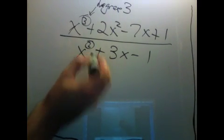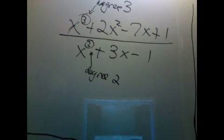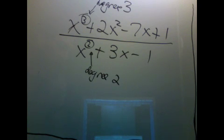Our first step will be to turn any rational function into a polynomial plus a special rational function where the polynomial on top has lower degree than the polynomial on the bottom. We achieve this by doing long division.